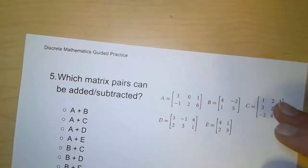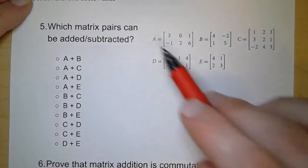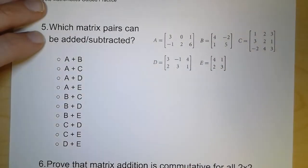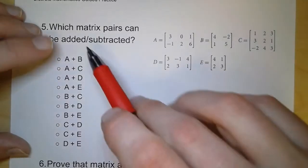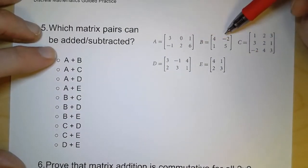All right. On the next page, what it asks for is what matrix pairs can be added or subtracted. Now, like I said at the beginning, in order to add or subtract, the matrices have to have the same order. So, A and B. Well, no, they have different numbers of columns. So that's no good.